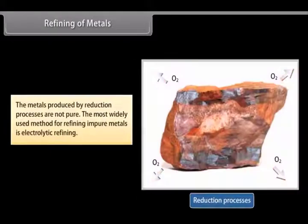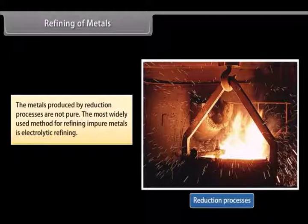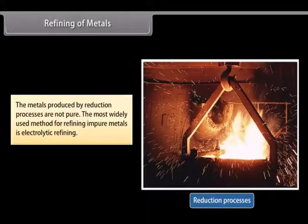Refining of metals. The metals produced by reduction processes are not pure. They still contain impurities which must be removed to obtain pure metals. The most widely used method for refining impure metals is electrolytic refining. Many metals are refined electrolytically.